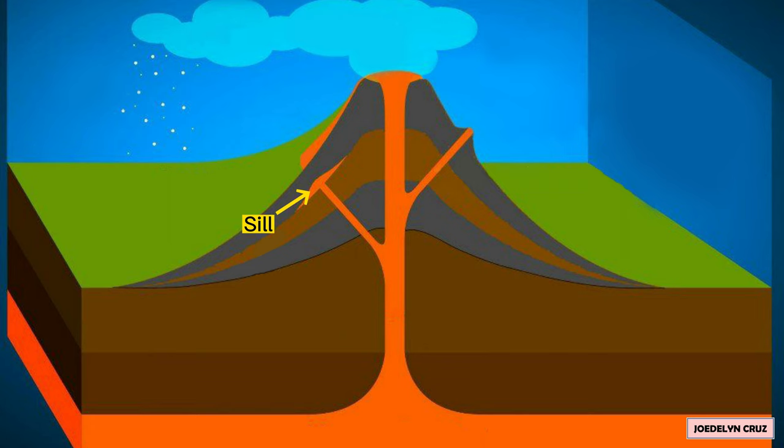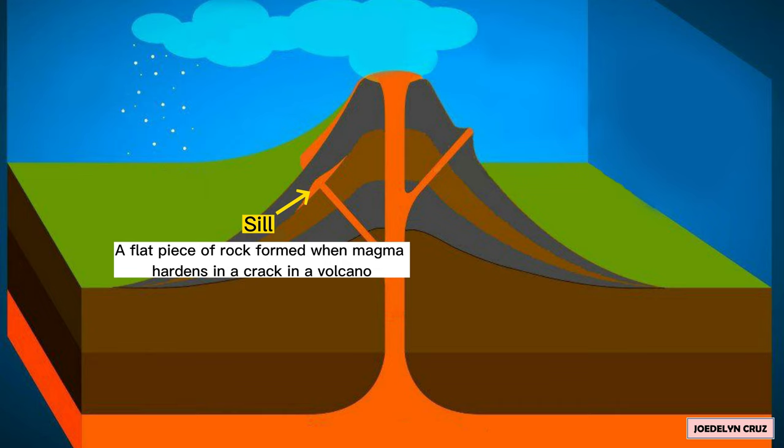Seal. Seal is a flat piece of rock formed when magma hardens in a crack in a volcano.